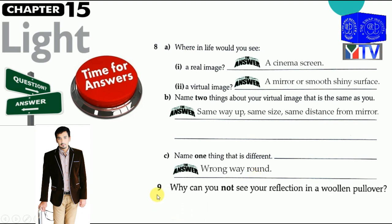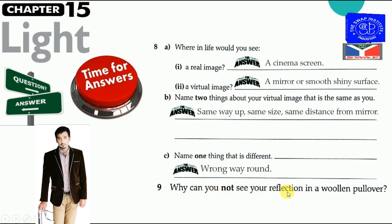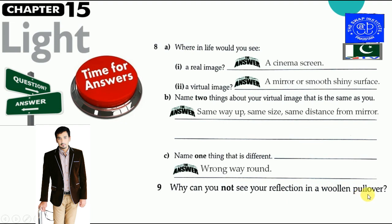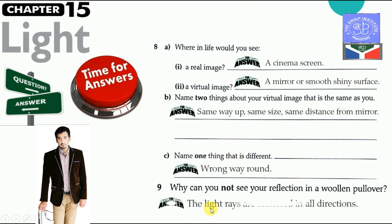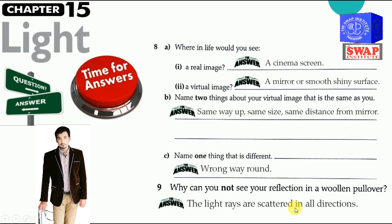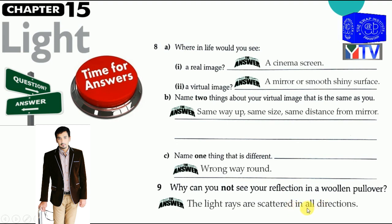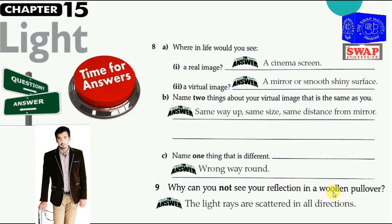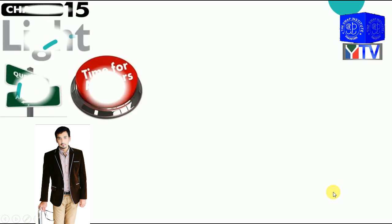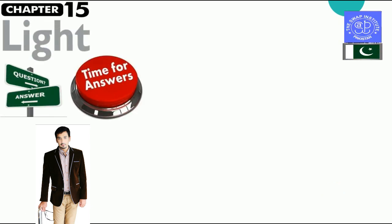Question number nine: why can you not see your reflection in a woolen pullover? The answer is that the light rays are scattered in all directions, so no image is formed.